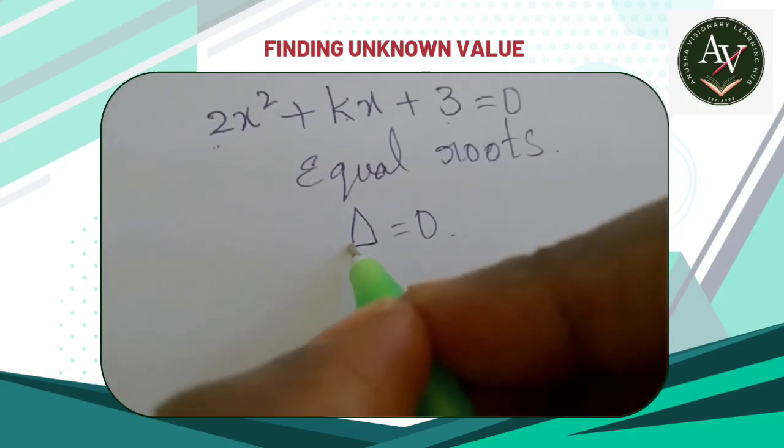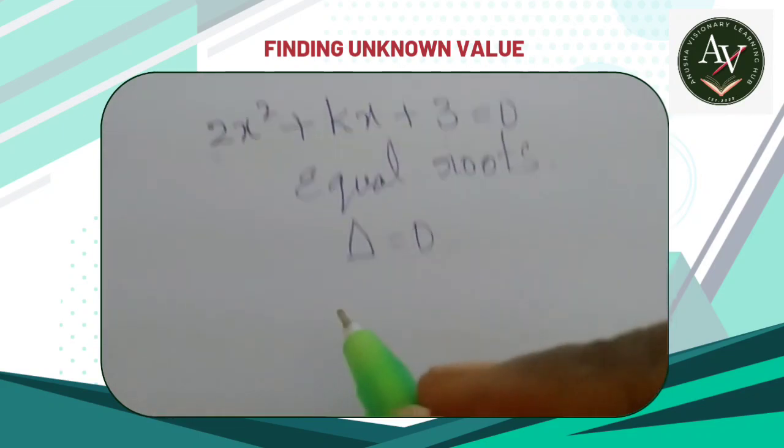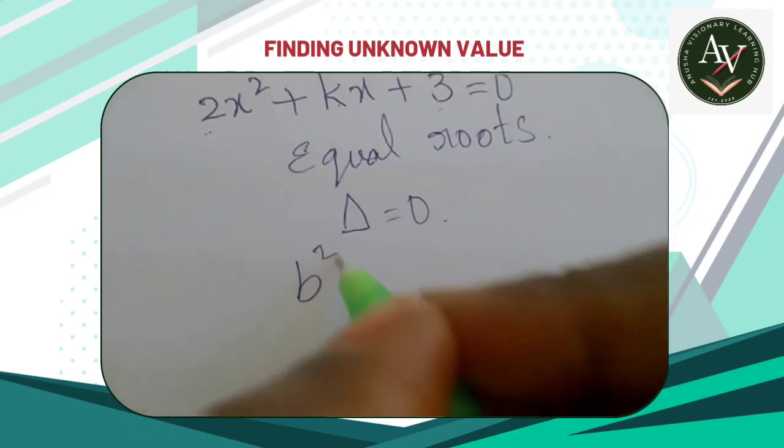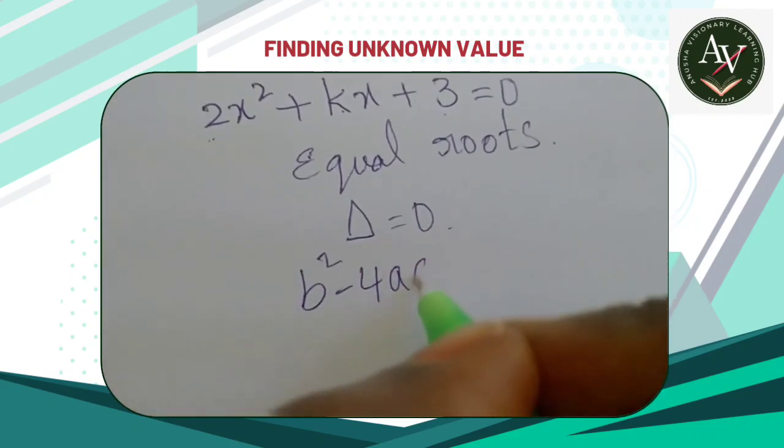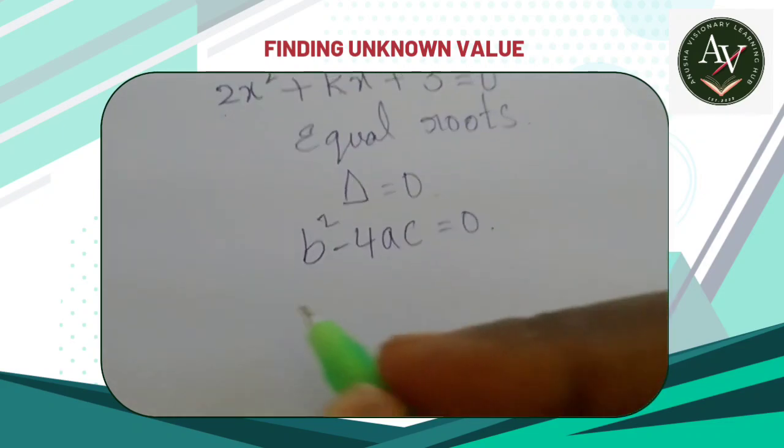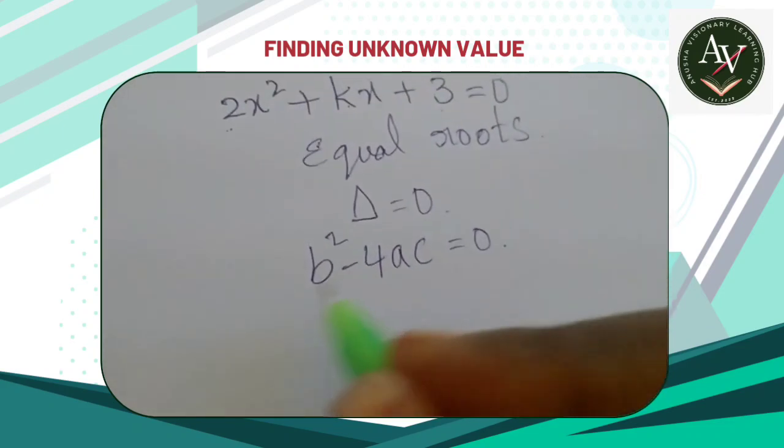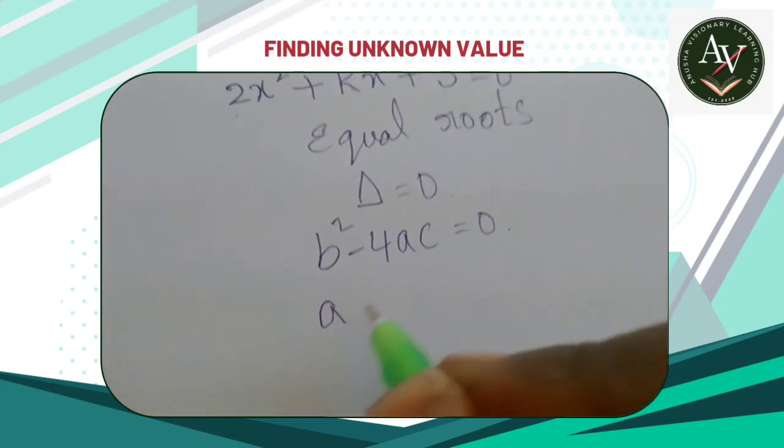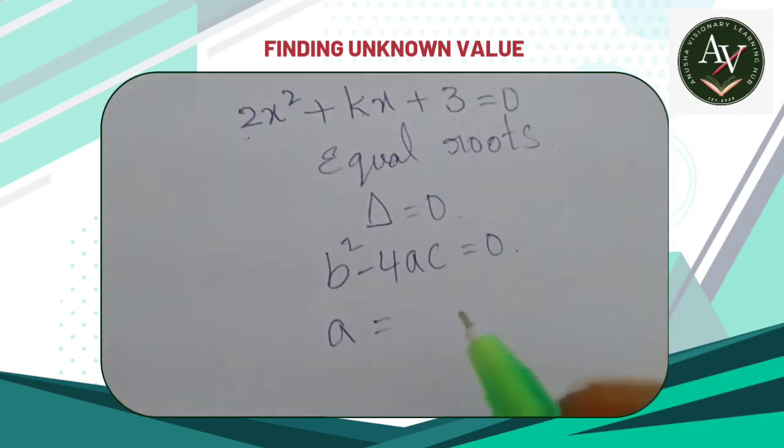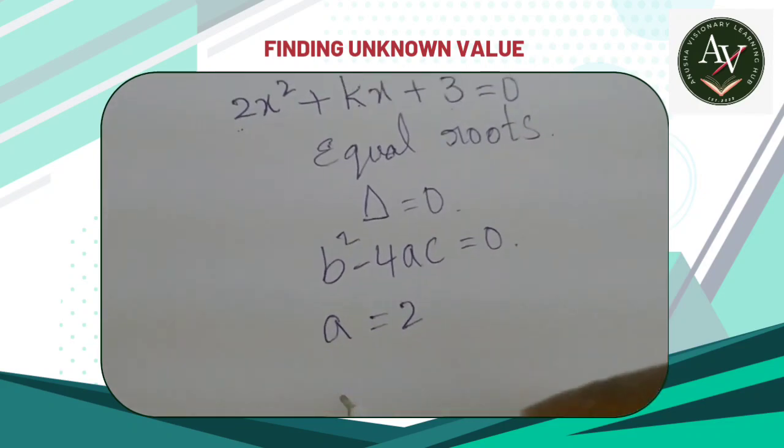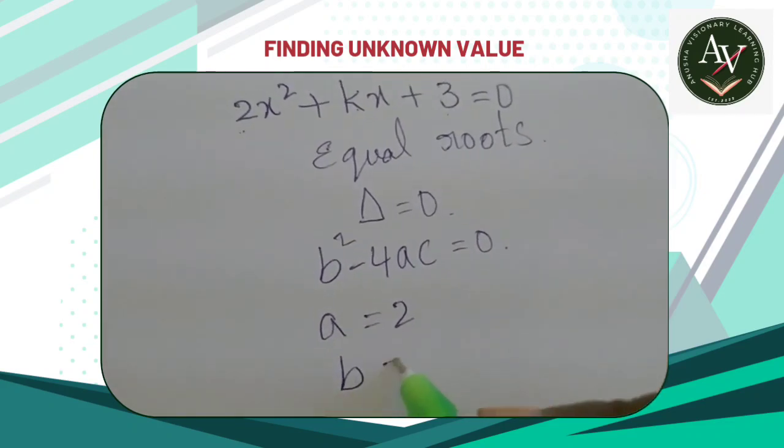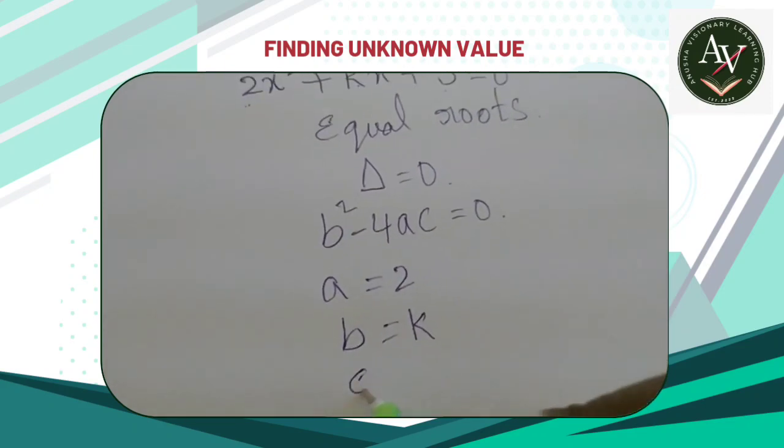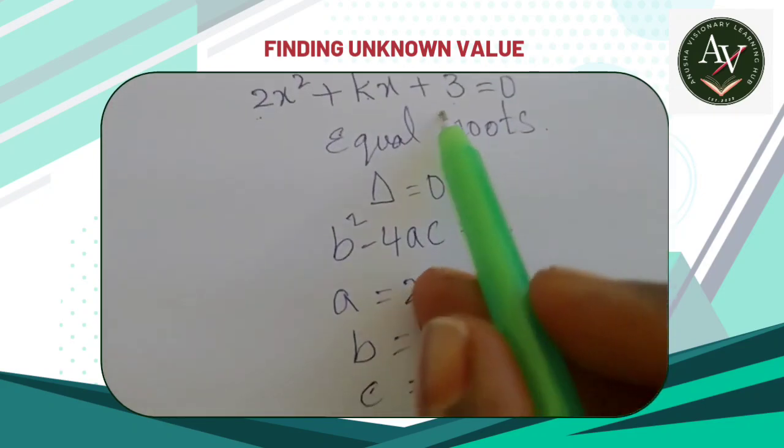What is delta here? Delta means discriminant. Formula to find the discriminant is b² minus 4ac equals zero. Where? Just write the values of a, b, c. Where a is equal to coefficient of x² that is 2, and b is equal to coefficient of x that is k. C is nothing but constant term that is 3.